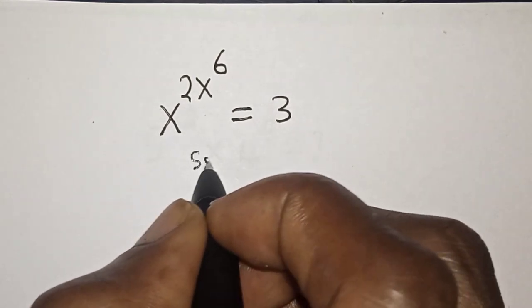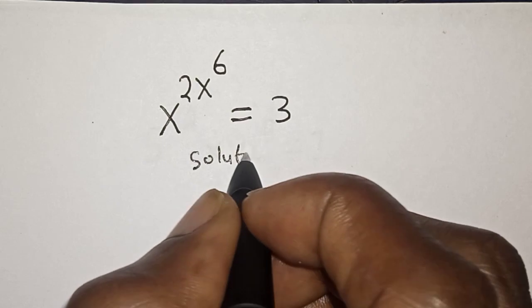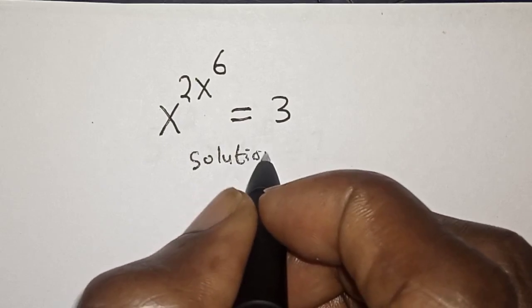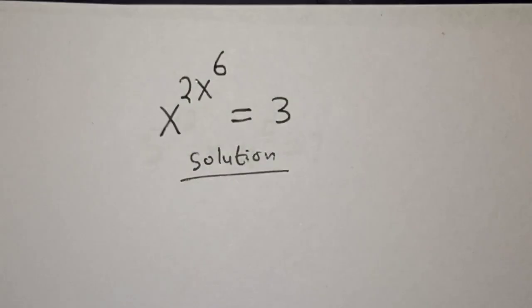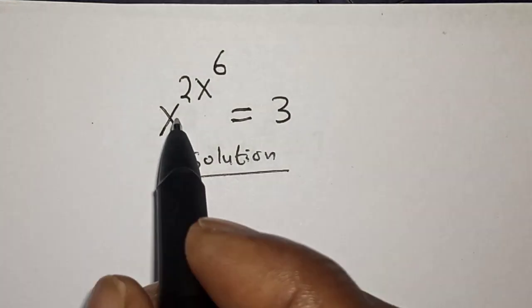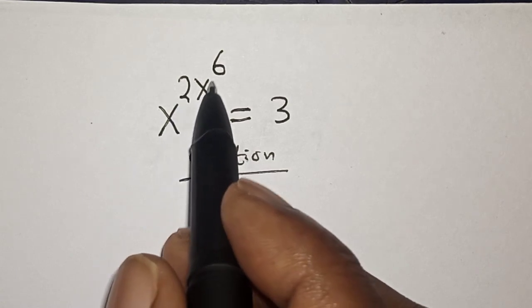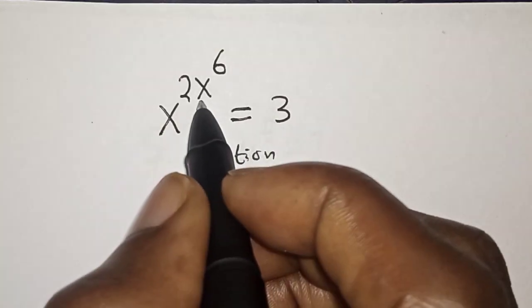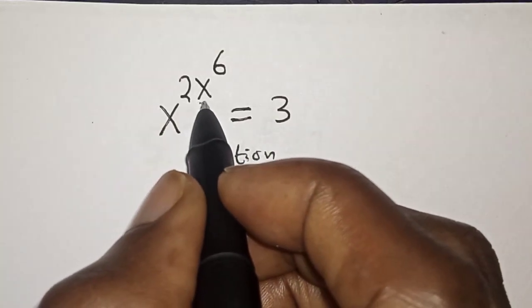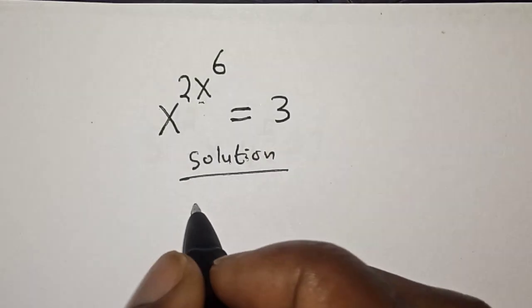Solution. We have s raised to power 2s raised to power 6 is equal to 3. Then let s raised to power 6 be equal to a.